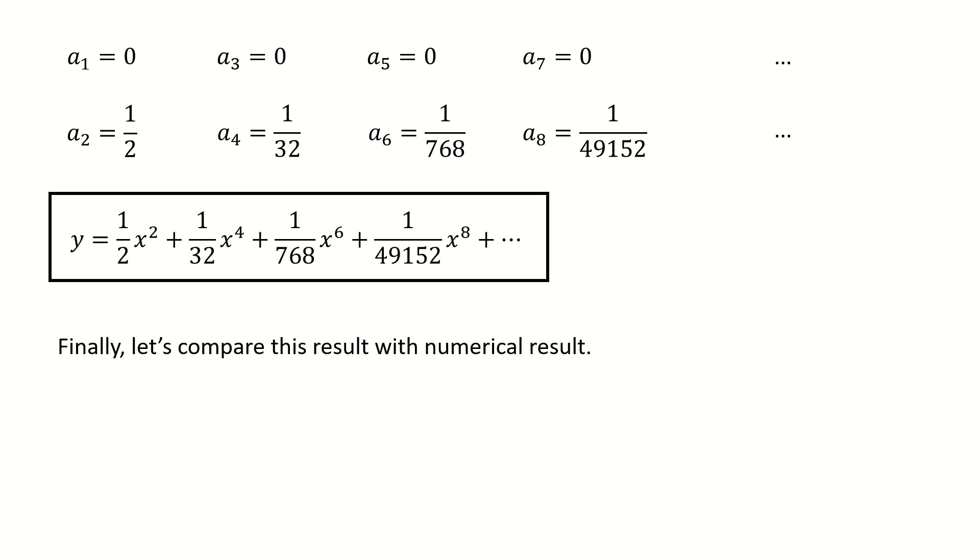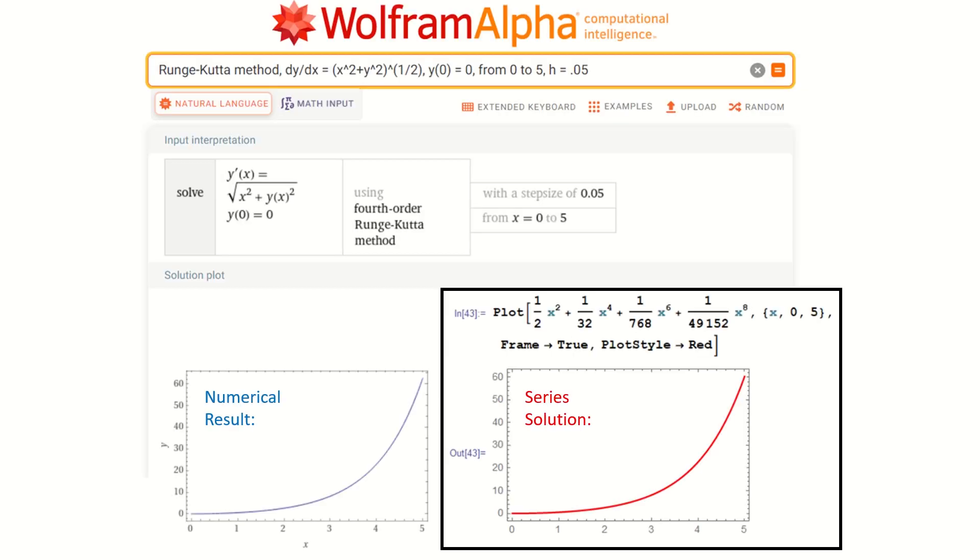And finally, let's compare this result with the numerical result. So here you can see the result from the Wolfram Alpha website. For the left panel, this blue curve is the numerical result, which is generated by using the fourth order Runge-Kutta method. For the right panel, this red curve is plotted by using our series solution. So you can see those polynomials above this figure. And you can see these two solutions match very good.